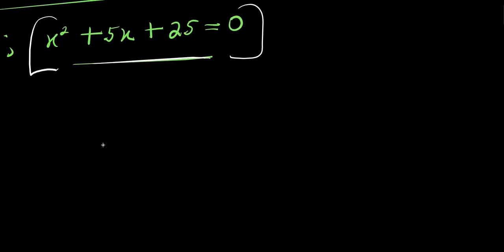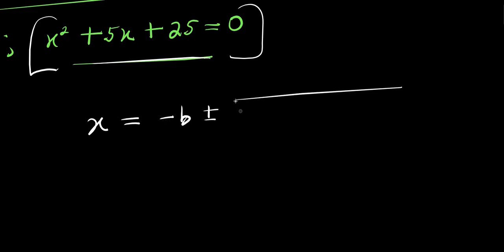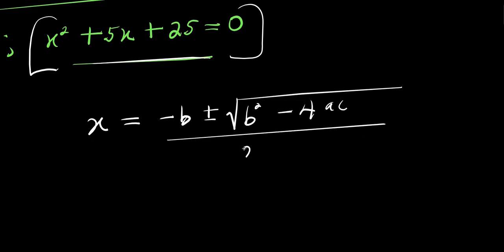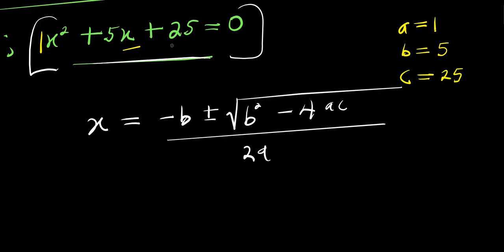For the quadratic equation, we make use of the quadratic formula: x equals negative b plus or minus the square root of b squared minus four times a times c, all divided by two times a. We have a equals one, which is the coefficient of x squared; b equals five, the coefficient of x; and c equals twenty five, the constant.